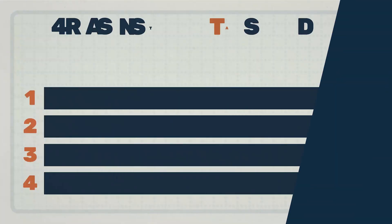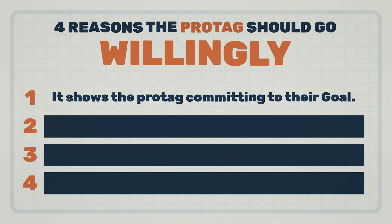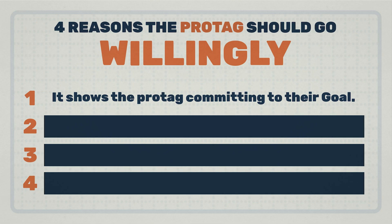The outer gateway is the protag's commitment to their goal. It is the first step of their journey, and they must take this step willingly. There are a few reasons for this, but the most important one is obvious: if your protag doesn't commit to a goal, there is no goal. And with no goal, there is no story. That's why the outer gateway is so important, and why it must be a decision the protag makes.